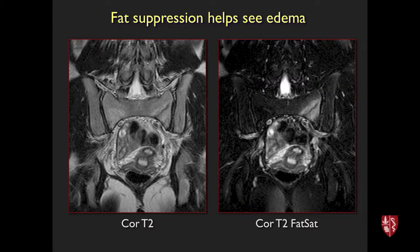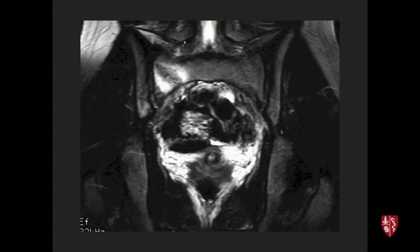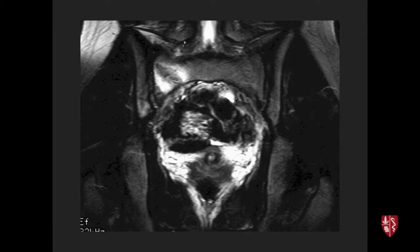Repeating the sequence with fat saturation turned on makes the injury much more conspicuous. A subacute fracture appearance may show a blurry, less sharp low-signal line rather than a distinct fracture, as the body begins remodeling with sclerosis and resorptive change. The imaging appearance varies depending on the stage of injury at the time the patient is imaged.